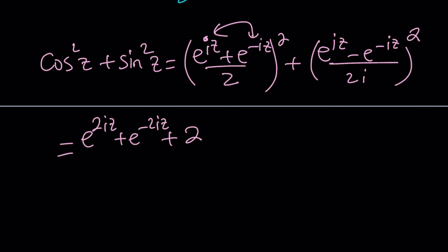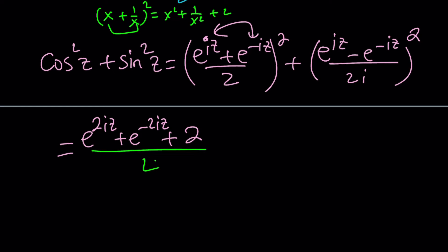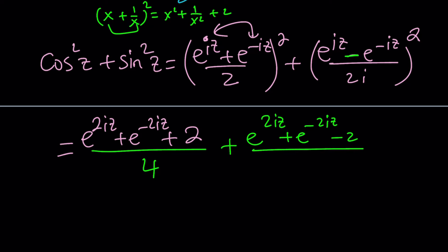It's kind of like the polynomial (x + 1/x)² — when you square it you get x² + 1/x² + 2. That is our first part, divided by 4. For the sine squared part, you get e^(2iz) + e^(−2iz) minus 2, divided by 4i². Since i² is −1, that becomes divided by −4. To handle the minus sign, we flip it so the numerator has a minus sign and the denominator becomes positive 4.